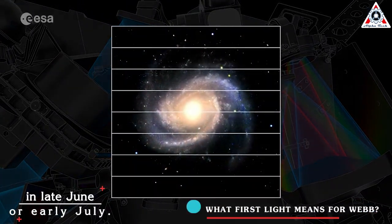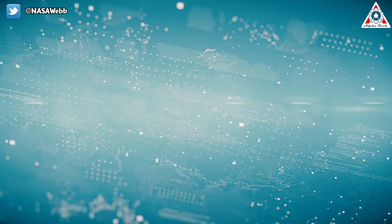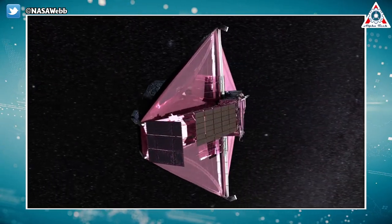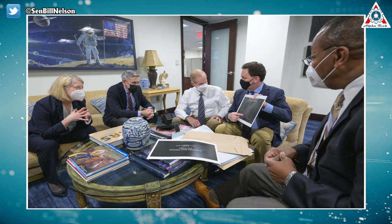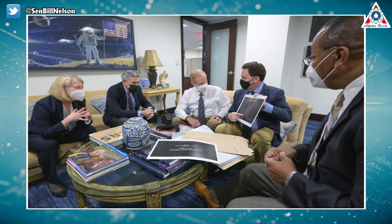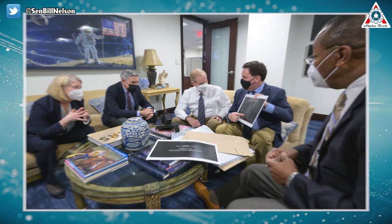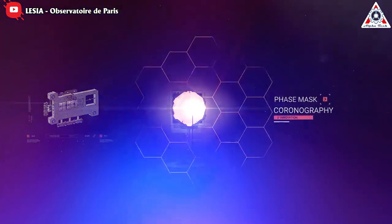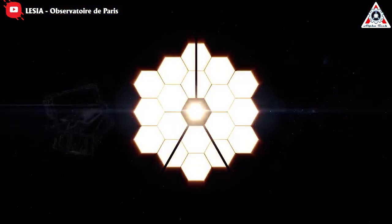So what does first light mean for Webb? These very first sets of data are critical for the next step toward Webb's science mission and toward getting actual images we on Earth might marvel at. These NIRCAM readings enable scientists on the ground to start aligning the telescope's 18 mirrors to form a fresh lens on the cosmos.